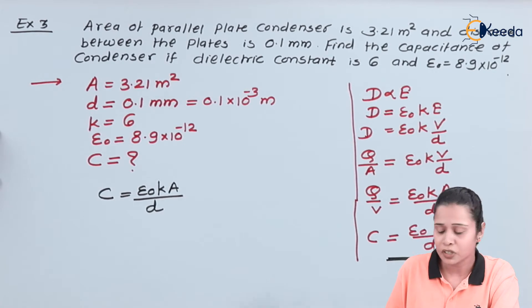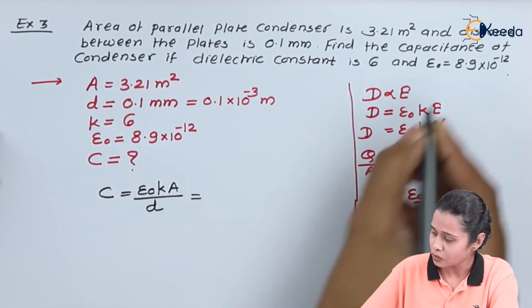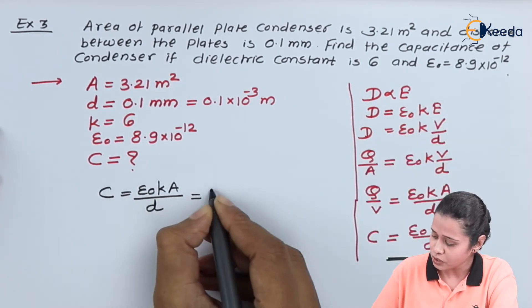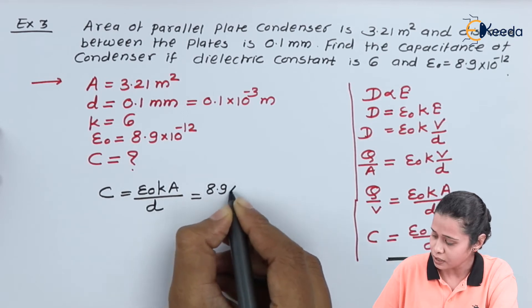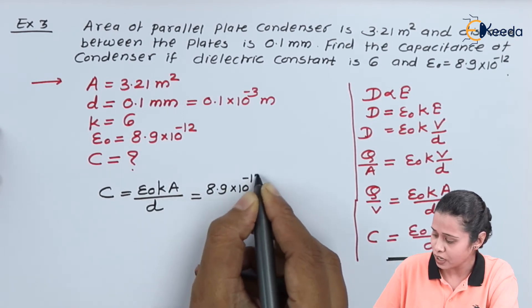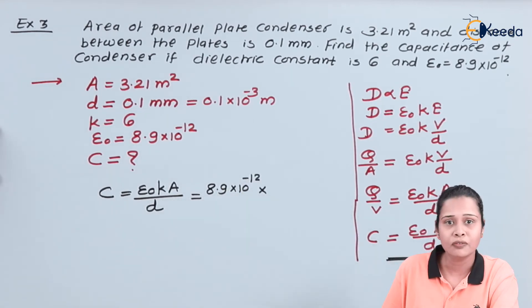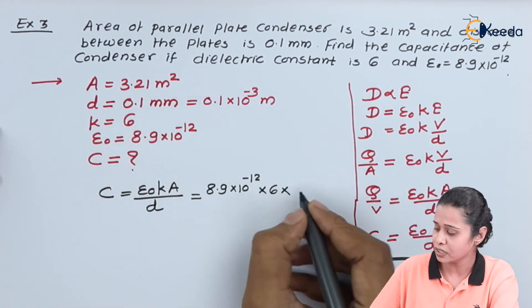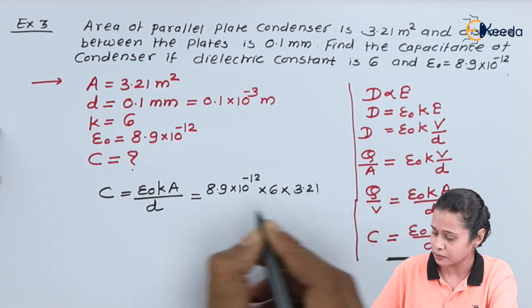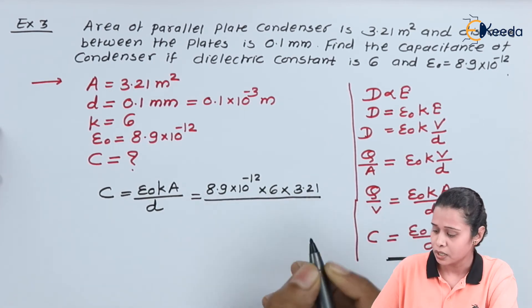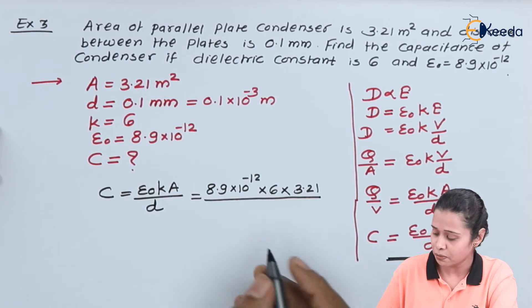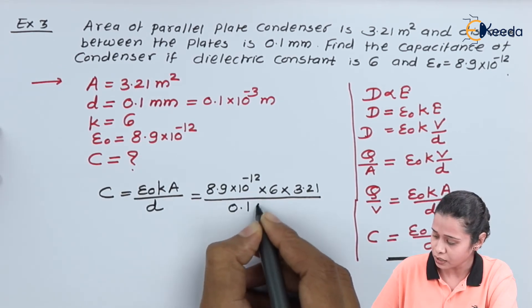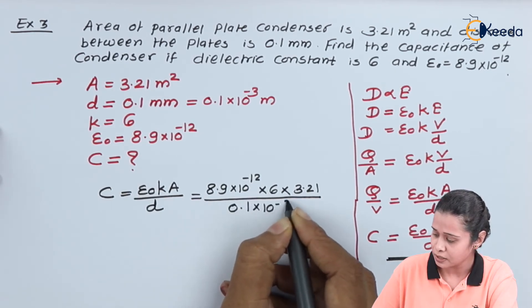Let us substitute the values. Here we have epsilon naught value that is 8.9 into 10 raise to minus 12, the value of dielectric constant is 6 into the area is given that is 3.21, upon the separation between two metal plates is 0.1 into 10 raise to minus 3.